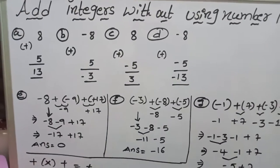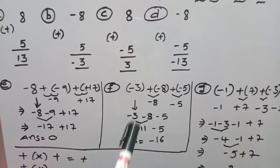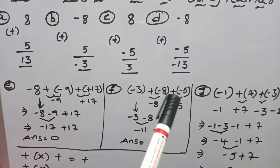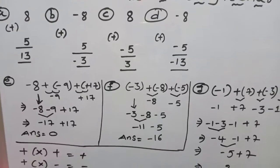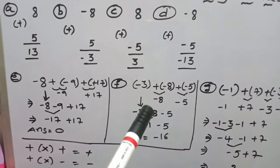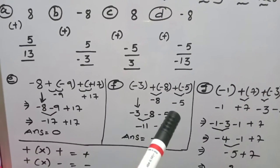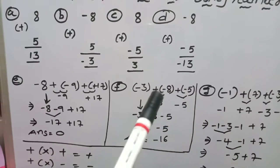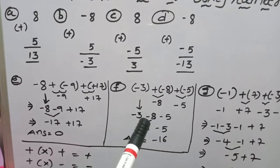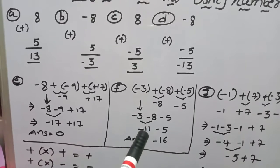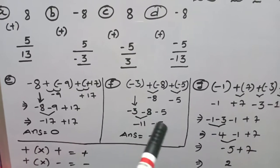Coming to example F: minus 3, plus of minus 8, plus of minus 5. Here consider 2 signs together — plus into minus means minus 8, and plus into minus means minus 5. So I write down minus 3 minus 8 minus 5. Minus 3 minus 8 means 3 plus 8 is 11; both are negative symbols, so give symbol as negative. Then minus 11 minus 5.